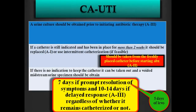If you suspect catheter-associated UTI, a urine culture should be obtained prior to antibiotics — this is A3. If the catheter is still indicated and has been in place for more than two weeks, it should be replaced — A1 recommendation. The culture should be taken from the freshly placed catheter before starting antibiotics. If the catheter can be removed, a midstream urine specimen should be obtained. Length of therapy: 7 days for prompt symptom resolution, 10–14 days for delayed response — A3. There are trials supporting 5 days of levofloxacin, as levofloxacin has a prolonged half-life.